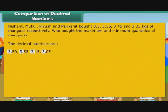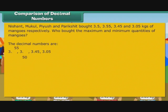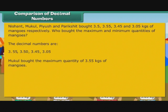All the numbers have 3 to the left of the decimal point. Therefore, we arrange them on the basis of the digits after the decimal point. These are 50, 55, 45 and 05. We are aware that 55 is greater than 50, which is greater than 45, which is greater than 05. Therefore, the quantities in the descending order are 3.55, 3.50, 3.45, 3.05. It means Mukul bought the maximum quantity of 3.55 kgs of mangoes, and Parikshit bought the minimum quantity of 3.05 kgs of mangoes.